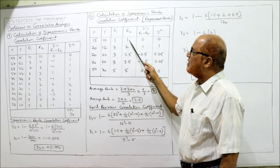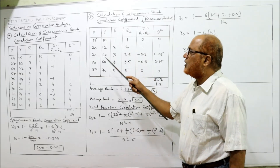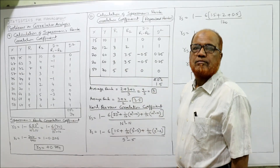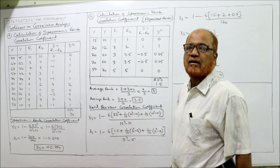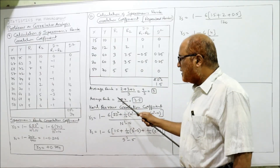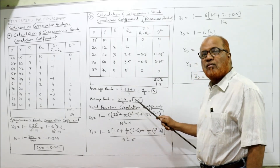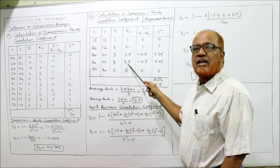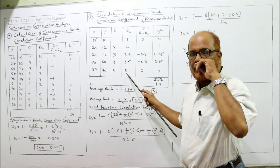For Y series: 10 gets first rank, 12 gets second rank. Next higher is 60, but 60 occurs 2 times. After second rank, the next two positions are third and fourth. Average = (3 + 4) / 2 = 3.5. So both 60s get rank 3.5. Four ranks are now used up, and the last value 70 gets fifth rank.